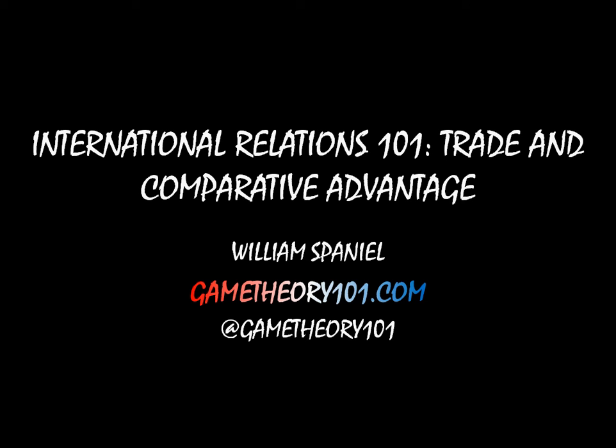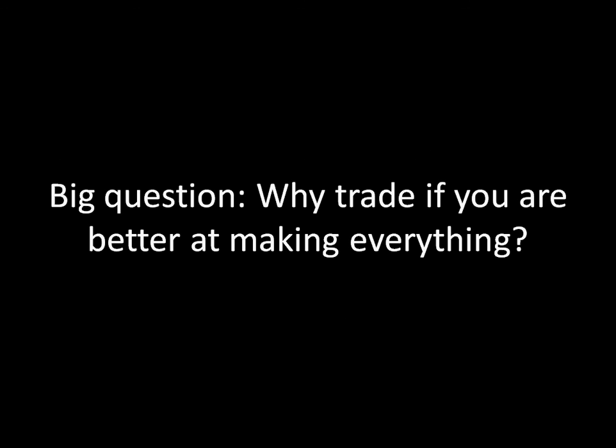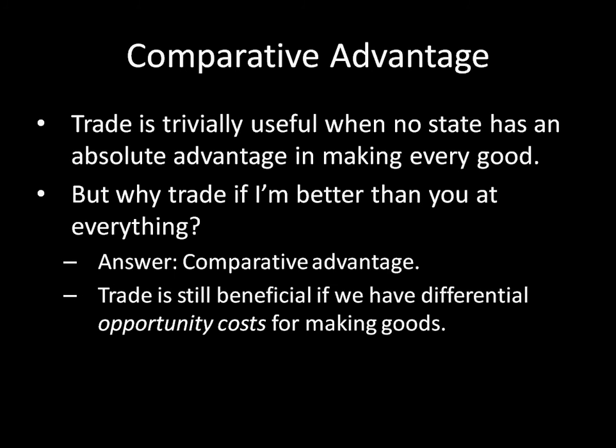But what if California is better at making everything? Would California still want to trade with Mexico under those circumstances? Well, the answer is yes. The big question we're going to be looking at in this video is essentially why — why trade if you are better at making everything? The answer lies in this idea of comparative advantage. What if California figured out a really good way of growing agave in the California deserts and could suddenly produce tequila better than Mexico could? Would California still want to trade with Mexico? Again, the answer is yes, because of comparative advantage.